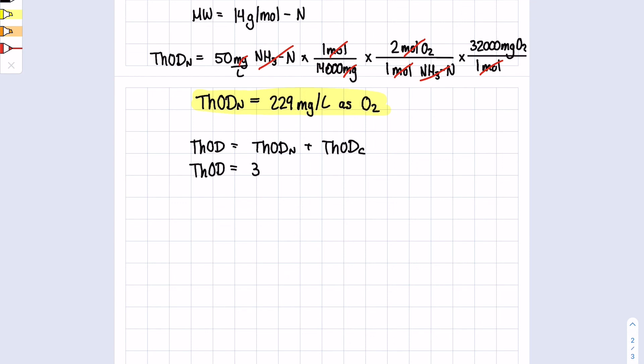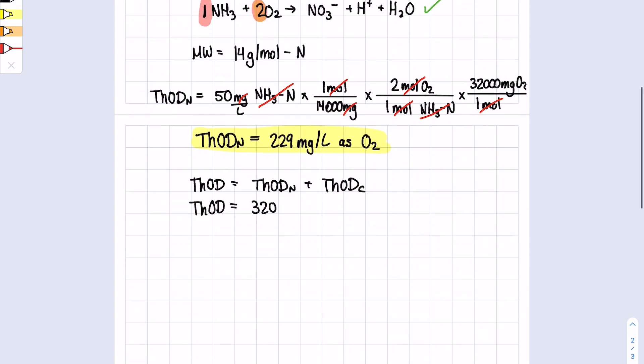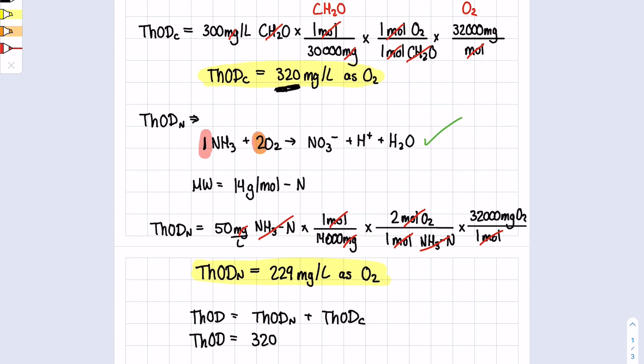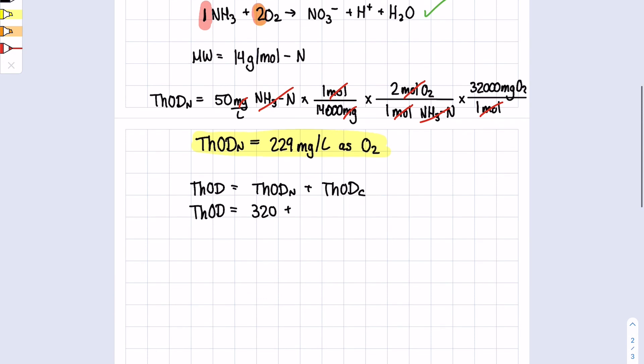We use our 320 milligrams per liter plus our 229 milligrams per liter, and that gives us a value of 549 milligrams per liter as O2. That is our final answer. Thanks for watching, guys!